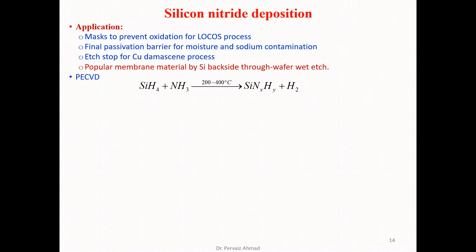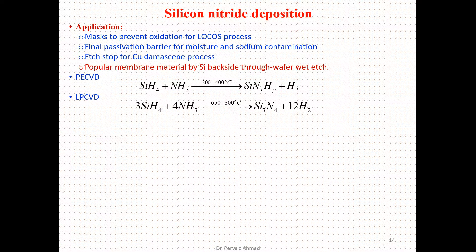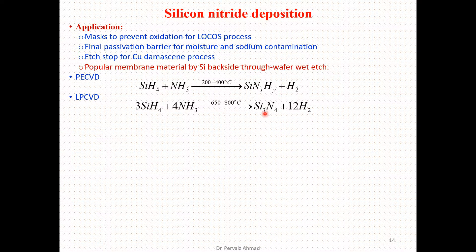We can also obtain silicon nitride using low pressure chemical vapor deposition (LPCVD). The reactions again occur in an ammonia atmosphere, but at temperatures in the range of 650 to 800 degrees centigrade. By applying LPCVD, we get almost pure silicon nitride.